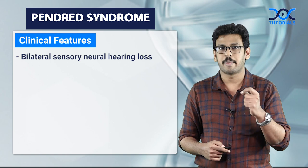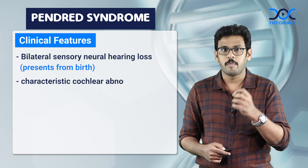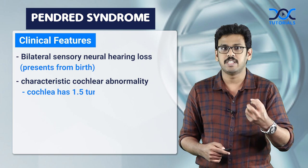The characteristic cochlear abnormality is Mondini malformation, where the cochlea will have 1.5 turns instead of the normal two and a half turns.